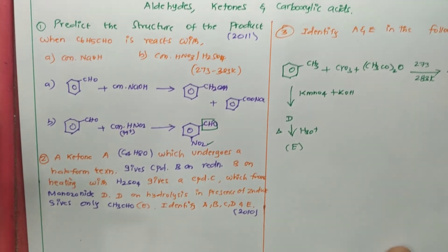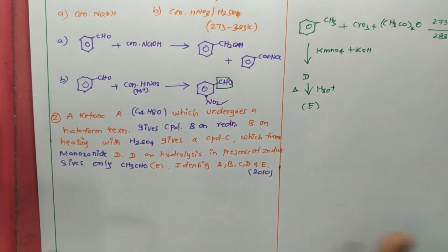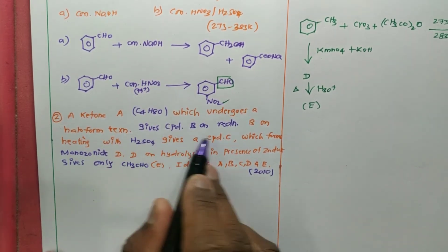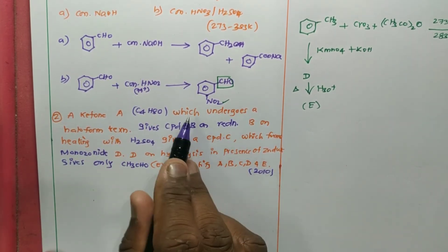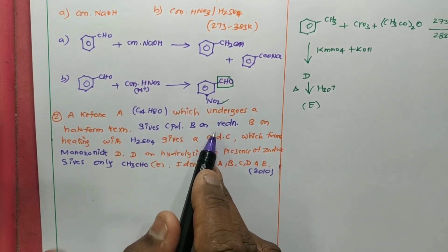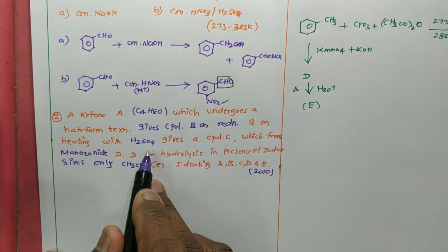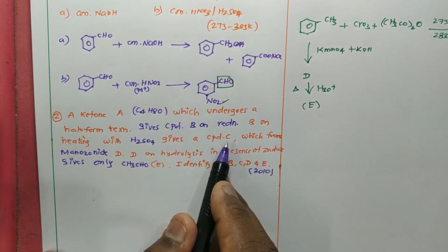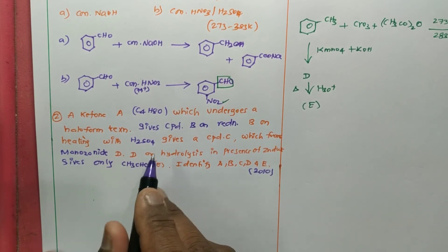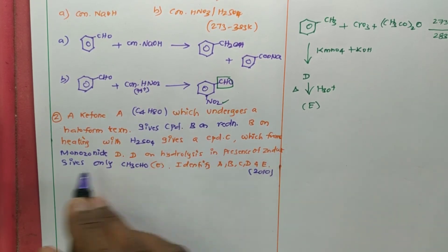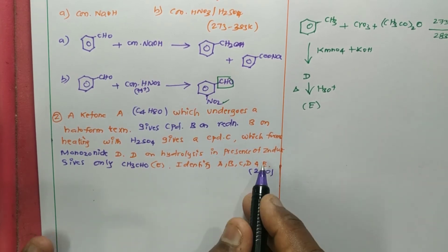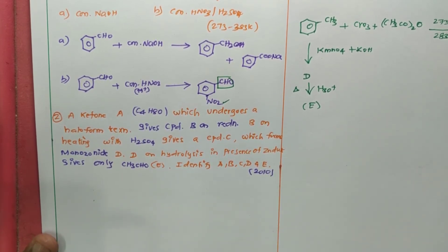The next question: a ketone C4H8O undergoes a haloform test and gives compound B on reduction. When you reduce compound A, it gives reduced product B. B on heating with sulfuric acid gives compound C, which forms mono-ozonide with D. D on hydrolysis in presence of zinc dust gives only acetaldehyde E. Identify A, B, C, D, E. This was asked in the year 2010.